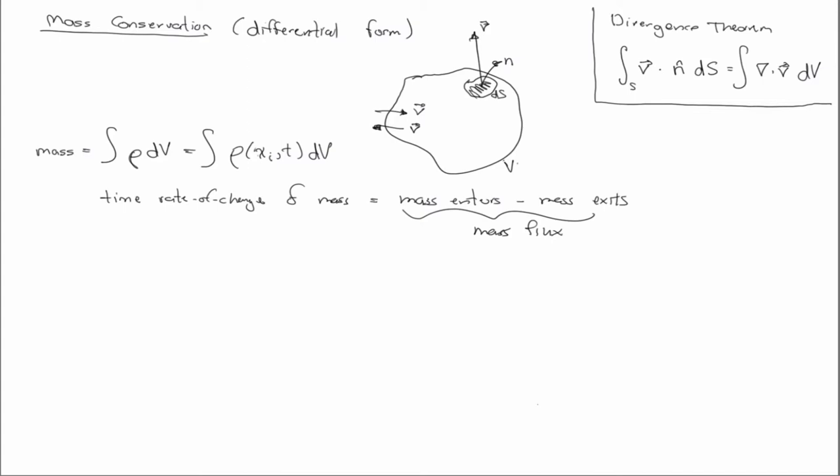So if we look at the time rate of change, here's our mass. Let's look at the time rate of change of mass. So that's going to be d dt integral rho dv. And because initially at the very beginning I said that V is fixed, V is not changing. So if V is not changing, the only potential thing in this equation that's changing is rho. So we can just move that differential operator inside. So then you have integral d rho dt dv. So this is the time rate of change of mass. This is the left-hand side of my statement there.